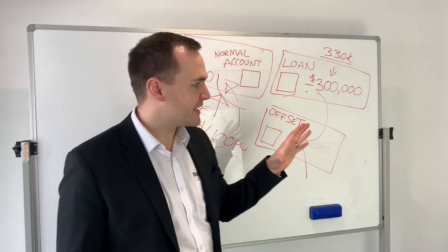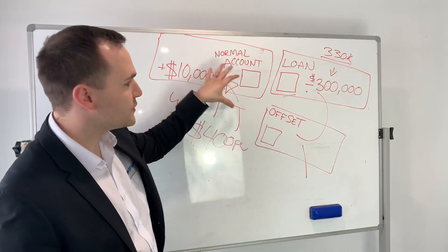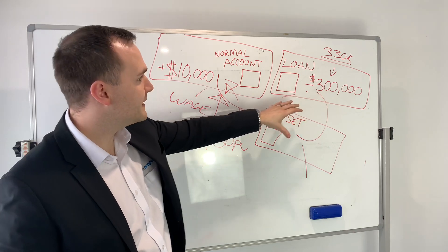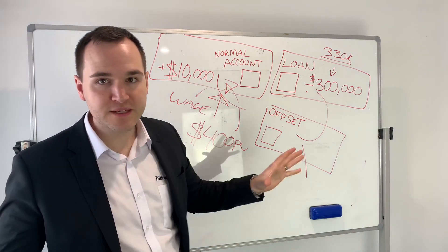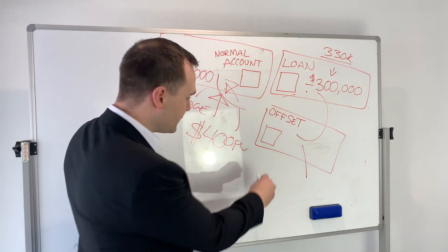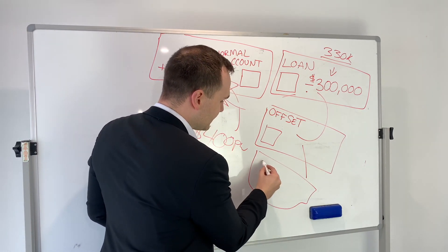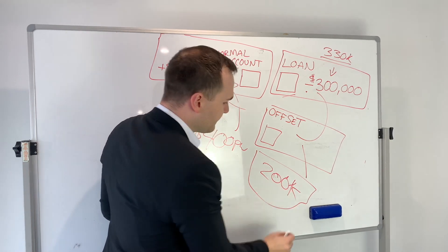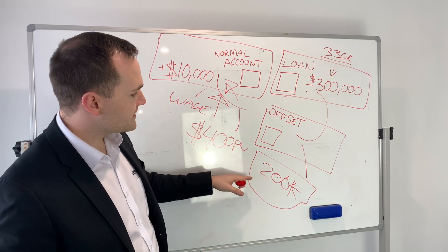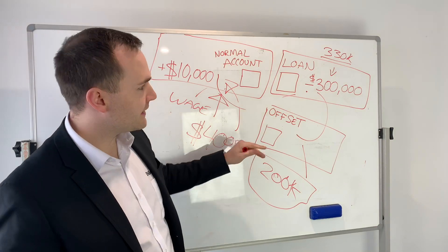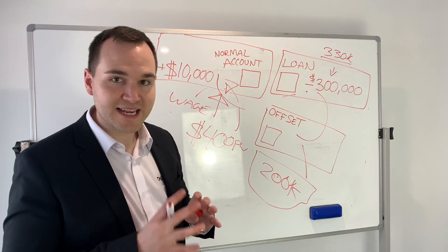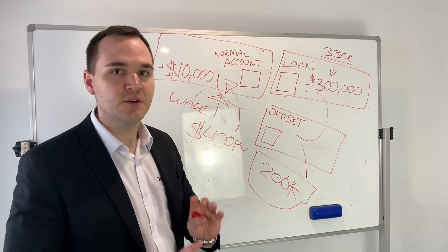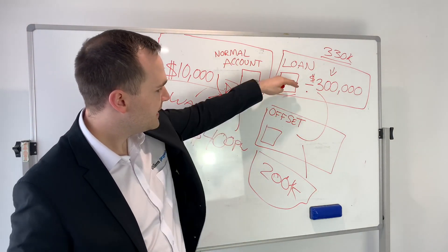So this is just an example — you've got an Offset account, your normal account, and your loan. If you buy another investment property, you'll have another loan, let's say the loan amount is $200K. It's the same thing. You don't really want your loans to stand together — this is talking about not cross-collateralising, which is covered in another video — but different loans, basically.